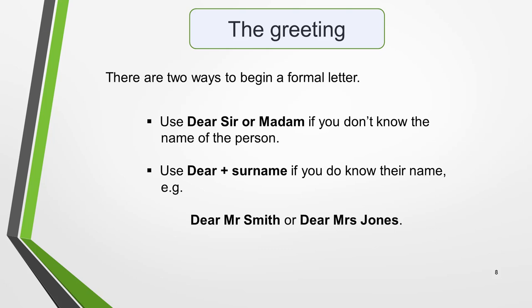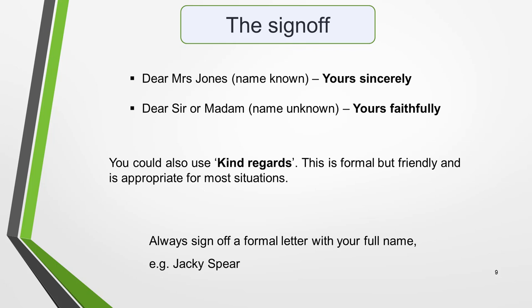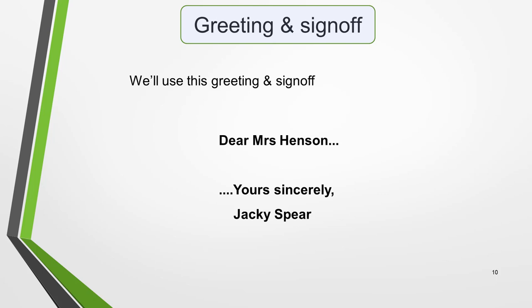The greeting you use will determine how you sign off the letter. For a formal letter, there are two main options. If you do know their name, use 'Yours sincerely'. If you do not know their name, sign off with 'Yours faithfully'. You could also use 'Kind regards' — this is formal but friendly and is appropriate for most situations. It's particularly useful if you struggle to remember how to spell 'sincerely' and 'faithfully'. Always sign off a formal letter with your full name — for example, Jackie Spear. For an informal letter to a friend, use one of these phrases followed by your first name: 'All the best', 'See you soon', 'Keep in touch' — for example, 'See you soon, Jackie'. For our letter, we'll use the greeting 'Dear Mrs Henson' and sign off 'Yours sincerely, Jackie Spear'.